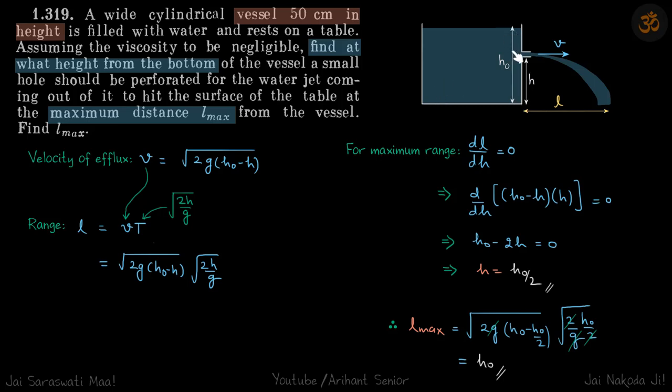We have a vessel with water filled up to height H0. There is a hole at a height H from the bottom and when the water falls, it falls at a distance L. We need to find what should be the height H such that this length L is maximum.